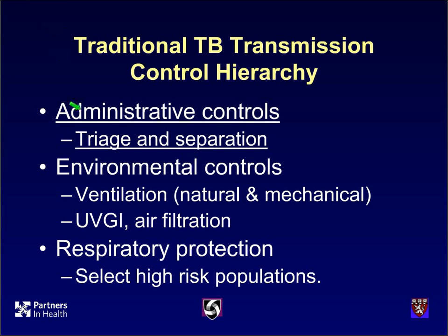We've talked about administrative controls, which involve not only triage and separation, but more importantly — or as importantly — early diagnosis and treatment of TB and drug-resistant TB. Environmental controls include ventilation, UV, and air filtration. Respiratory protection for both workers and surgical masks for patients. My next webinar next Tuesday will focus on upper room UVGI, where we've made considerable progress in recent years.